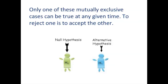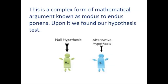Notice that we have a null hypothesis and we have an alternate hypothesis. We have not yet learned to write the alternate hypothesis, but remember what we learned about the null hypothesis. The null hypothesis is a claim about the population which says that the mean of the population is some value, or could claim that the true percentage in the population is some value — p equals or mu equals. The alternate hypothesis will be the other side of that claim. This is actually a very complex form of mathematical argument known as modus tollendo ponens.